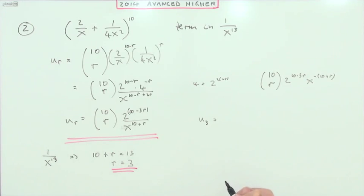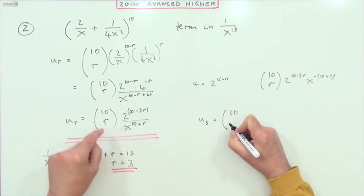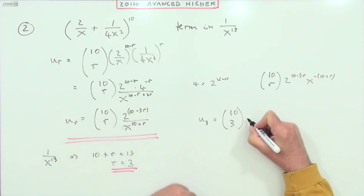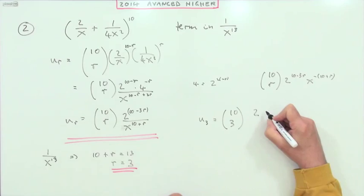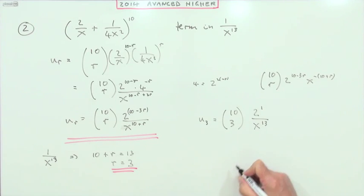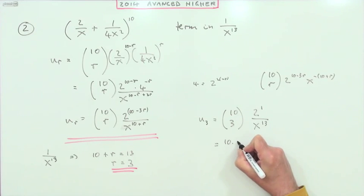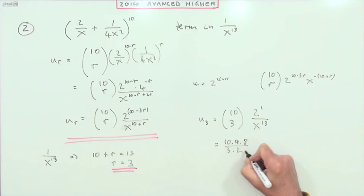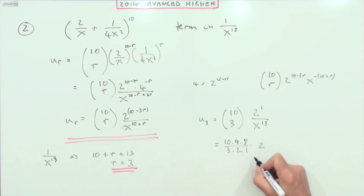So the term I'm looking for is term U_3. Remember that's actually the fourth term as written, but it's not asking for its position. That would be 10 choose 3 times 2 to the power 10 minus 9, which would be 1 over x to the 13. Now 10 choose 3 is, or you could just use your calculator, 10 times 9 times 8 over 3 times 2 times 1, and that'll be that times 2 over x to the 13.